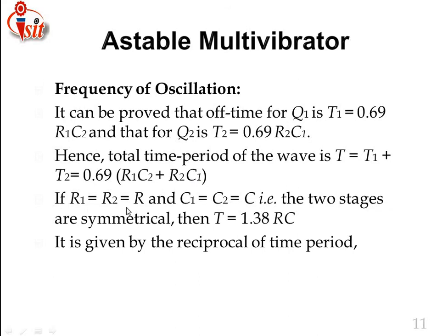Hence the total time period T = T1 + T2 = 0.69·(R1·C2 + R2·C1). If R1 = R2 = R and C1 = C2 = C — that is, the two stages are symmetrical — then T = 0.69·(RC + RC) = 0.69 × 2RC = 1.38RC. This is the total time period of the astable multivibrator.